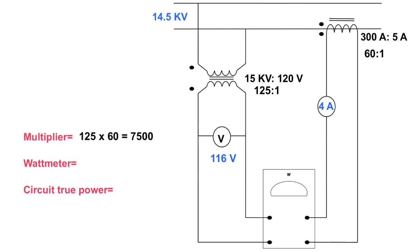So by taking 14,500 volts divided by 125 I get 116 volts there. So now at my wattmeter, I have 116 volts applied, I have 4 amps going through it. I end up with my wattmeter reading of 464 watts.